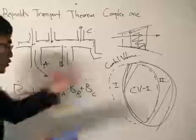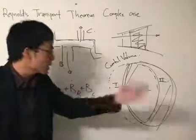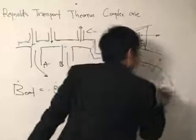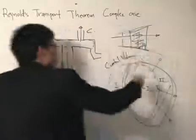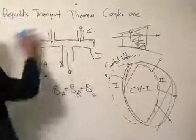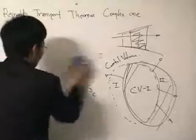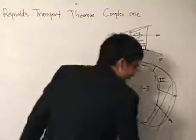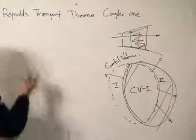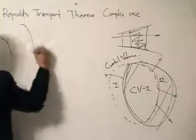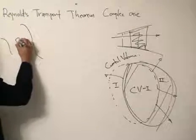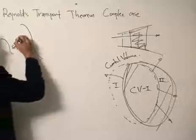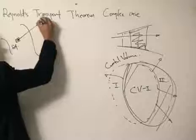I'll give you a small introduction: we need to use some vector algebra to handle this, because the extensive property is flowing in all sorts of directions — that's why we need vectors. Our main analysis is to look at the outflow of the extensive property from the control surface. We've got a certain control surface, and using calculus methods, we're going to label a small area dA, and then we have the velocity vector that moves out.